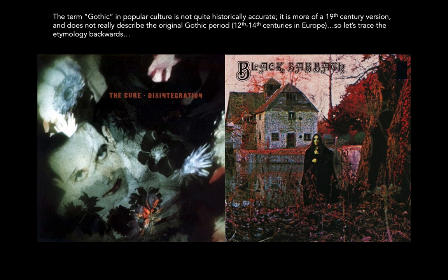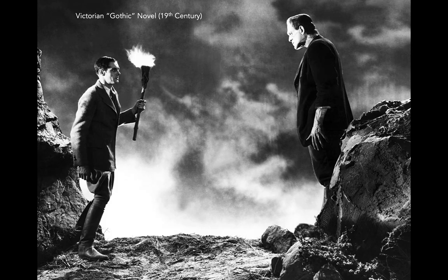But that's not actually what the word Gothic means in the time period we're studying — the 12th to 14th centuries in Europe, the Gothic period itself. Our contemporary understanding of the word Gothic comes from the 19th century, where goth or gothic meant something kind of dark and macabre, maybe part of a horror genre — the Victorian Gothic novel, mainly in England, France, and Western Europe.